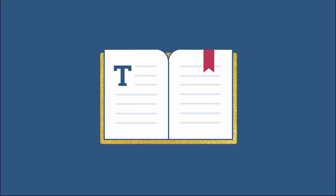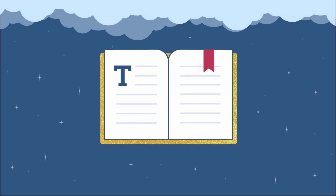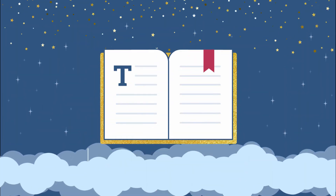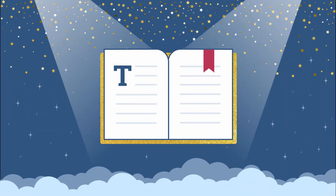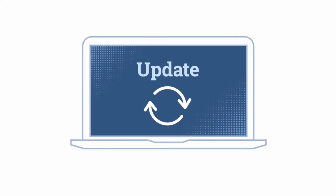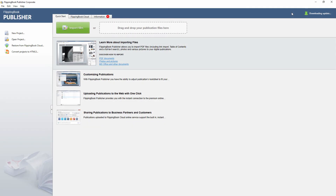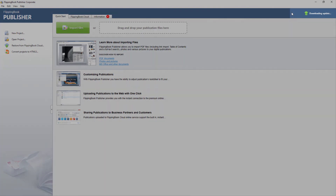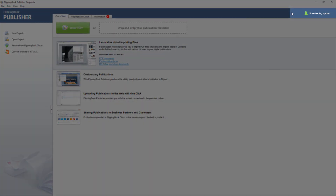Take your viewers' experience to a whole new level with the new Flipping Book Publisher. We are sure that you will love using version 2.9.8. There are two ways to get the latest version: start your Flipping Book Publisher and it will update automatically.